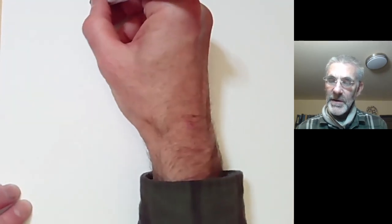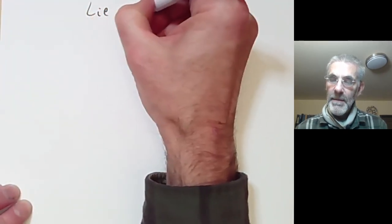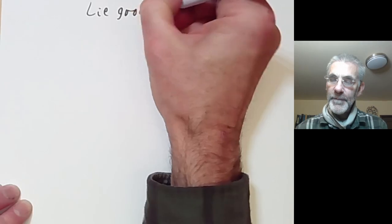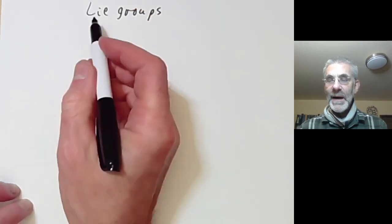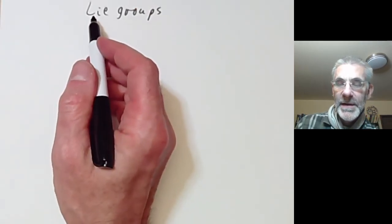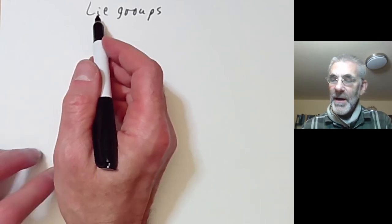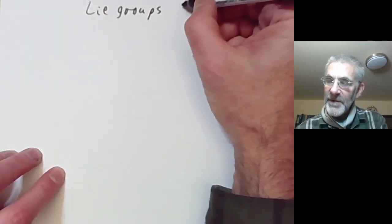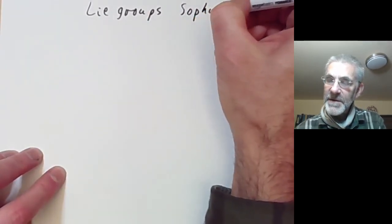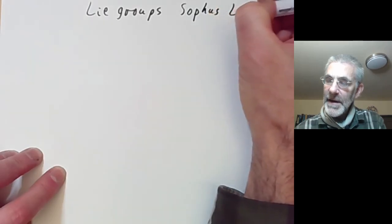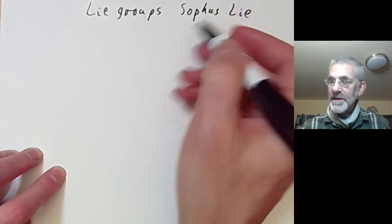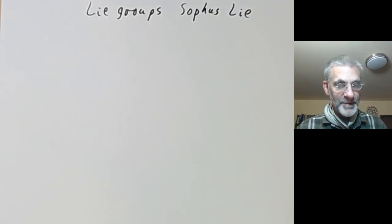This is the introductory lecture of an online graduate course on Lie Groups. To get one thing out of the way, it's pronounced 'Lee Groups' not 'Lie Groups' because it's named after the Norwegian mathematician Sophus Lee, and they spell things a bit differently over there.